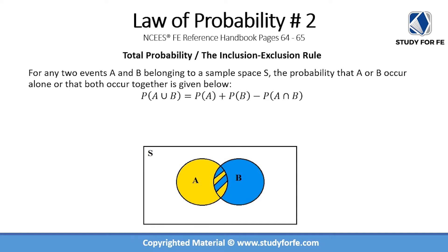Law of probability number two is also known as the total probability law or the inclusion-exclusion rule. It simply states that for any two events A and B belonging to a sample space S, the probability that A or B occur alone, or that both occur together, is given by: P(A ∪ B) = P(A) + P(B) − P(A ∩ B).